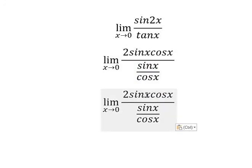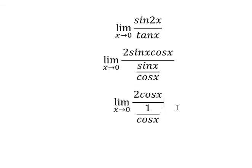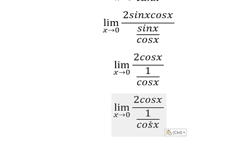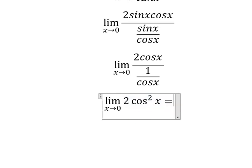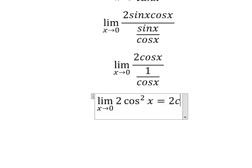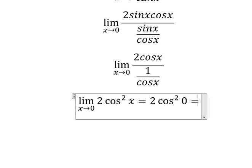The sin(x) on the numerator and sin(x) on the denominator will simplify. And this one goes to the numerator. We have cos(x) remaining. Then this number 0 will go in here, and we get the number 2.